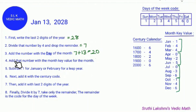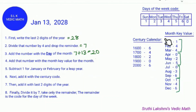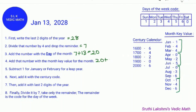Next, add that number with the month key value for the month. The month here is January, so we find January on the month key value table. The month key value for January is 1. So we do 20 plus 1, which equals 21.